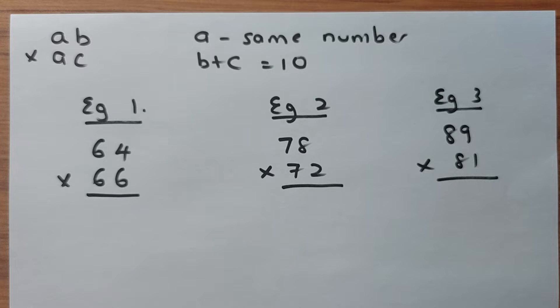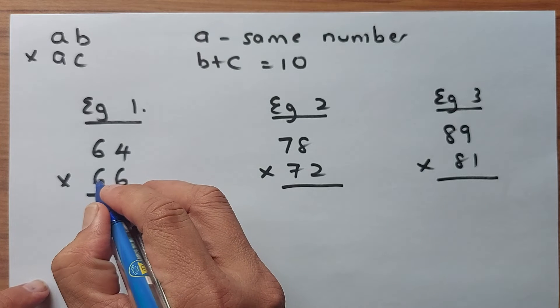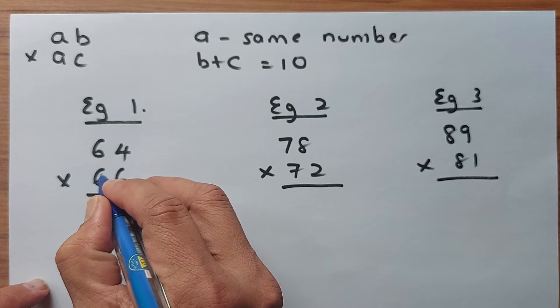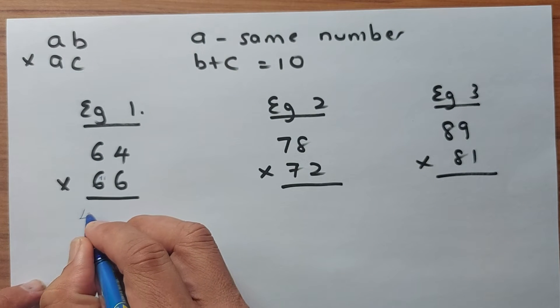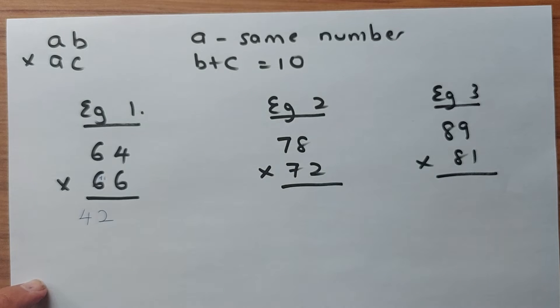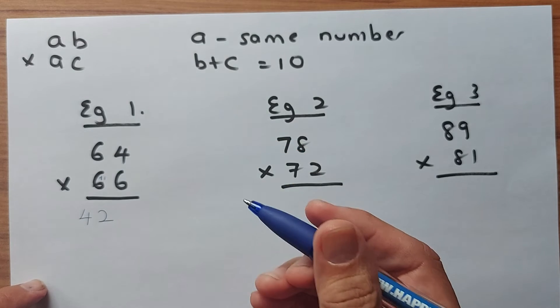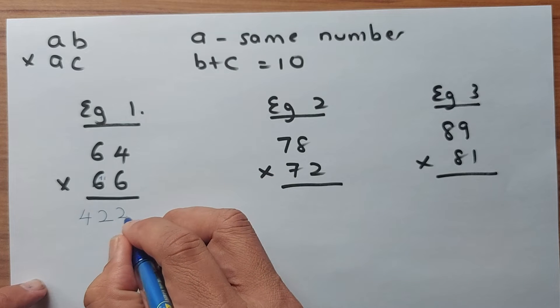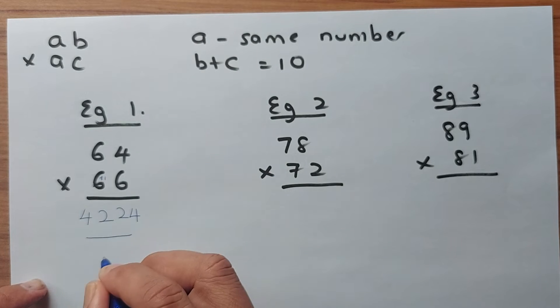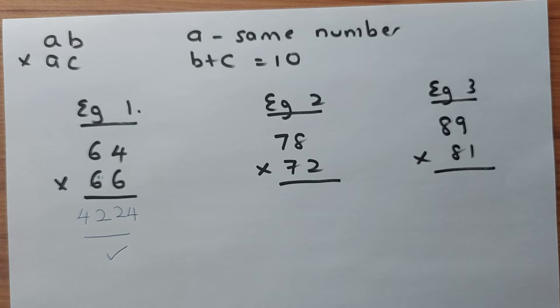So in this case we are going to multiply them in seconds. Instead of 6 we are going to increase by 1. 6 becomes 7. So the first number 6 times 7 is going to be 42. And then the second part is just a simple multiplication. 4 times 6 is going to be 24. And that will be how easy it is to multiply a number in this scenario.